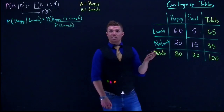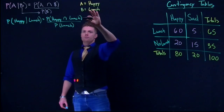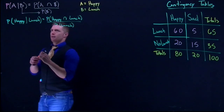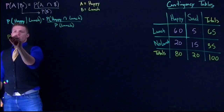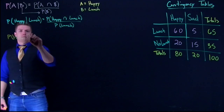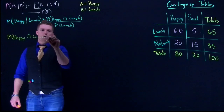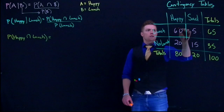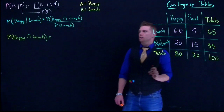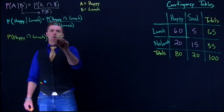To figure out the conditional probability, we need to figure out this intersection and the probability of lunch. The probability of happy intersect lunch: looking at our table, happy and lunch intersect right here at 60, and we have a total of 100 in our sample space, so this is going to be 60 over 100.